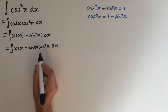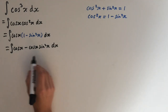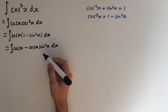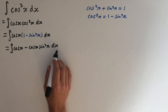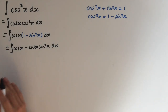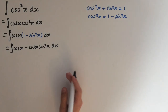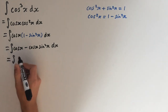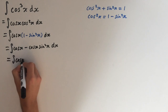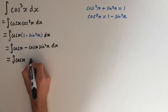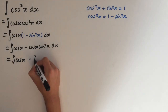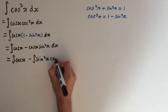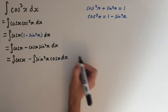I'm going to split this up into two integrals and then use substitution for the second part. You could also use integration by inspection, but I'll be doing substitution to show you clearly step by step. So we get the integral of cos of x minus the integral of sin squared of x times cos of x dx.